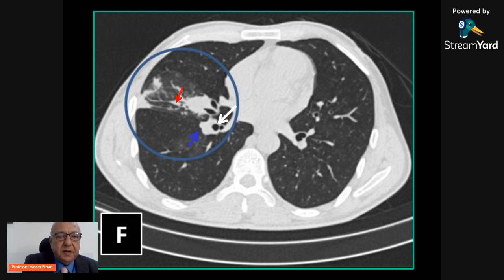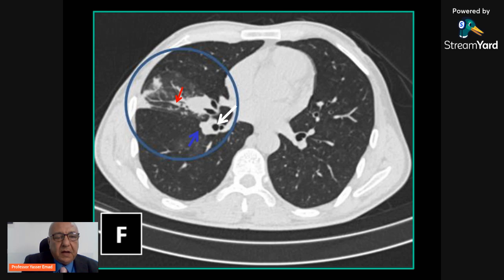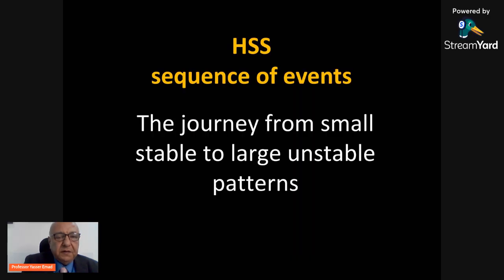This patient with Hughes-Stovin syndrome has a true unstable pulmonary artery aneurysm leaking into the adjacent bronchus. The patient will experience attacks of hemoptysis depending on the severity of blood extravasation. In the case of the aneurysm breaking down into an adjacent bronchus, this may lead to serious complications and even a fatal disease course.